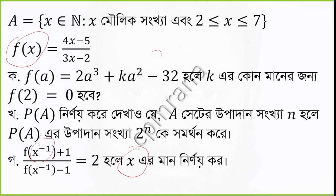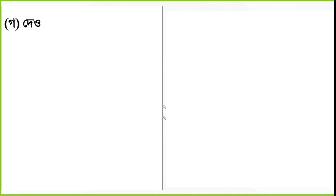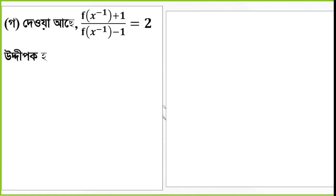x inverse is equal to 1 by x. So we will know that f of 1 by x is equal to f of x inverse. Substituting 1/x: the numerator becomes 4(1/x) minus 5, which equals 4 minus 5x over x, and the denominator is 3x minus 2.